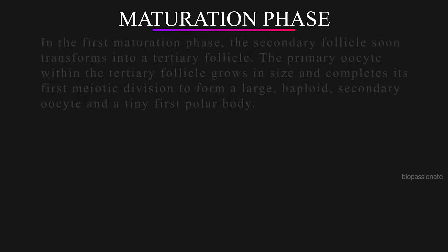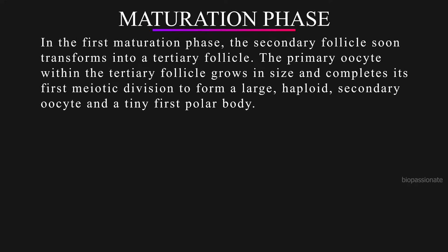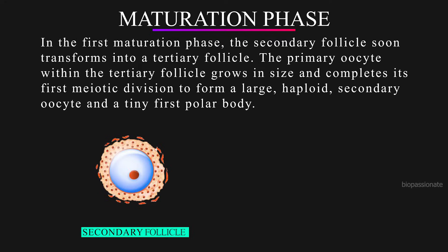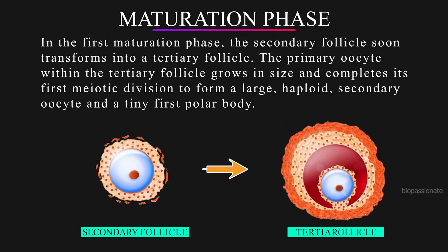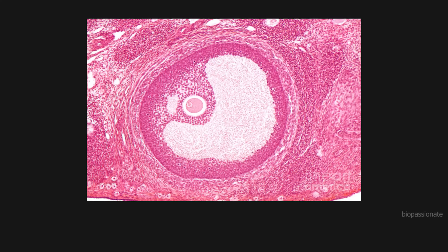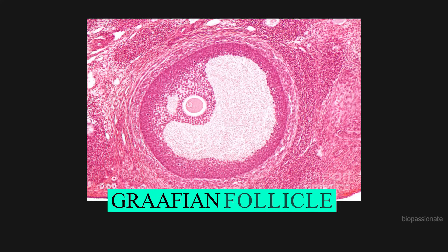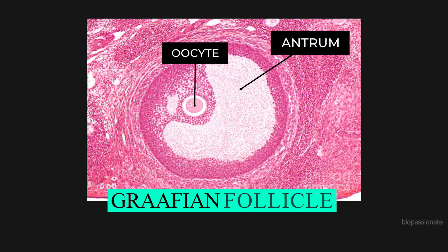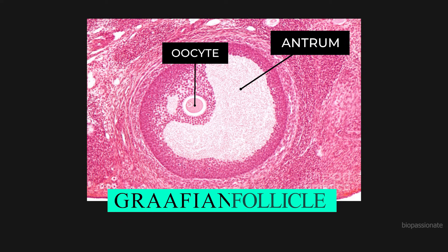During the maturation phase, the secondary follicle soon transforms into a tertiary follicle. The primary oocyte within the tertiary follicle grows in size and completes its first meiotic division to form a large haploid secondary oocyte along with a tiny first polar body. A microscopic view shows the Graafian follicle with a secondary oocyte and the fluid-filled cavity called the antrum.